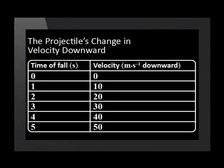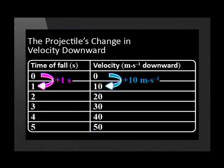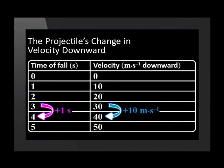Now there's a pattern in how much the projectile gets faster. During the first second the projectile's velocity increases from zero to 10 meters per second. During the second second it increases from 10 to 20 meters per second. During the third second it increases from 20 to 30 meters per second. So for every second the projectile falls, its velocity gets 10 meters per second faster.